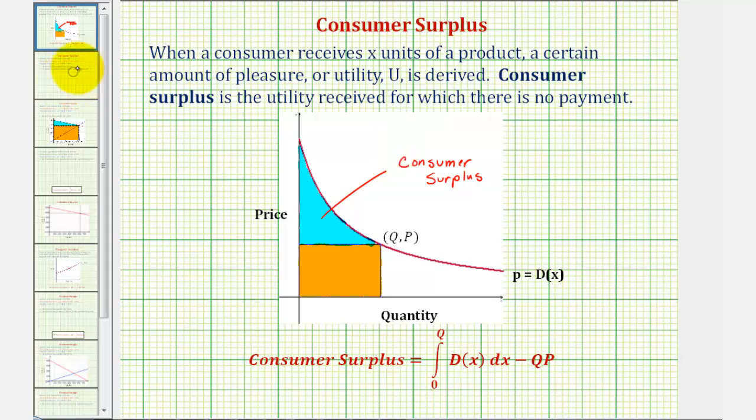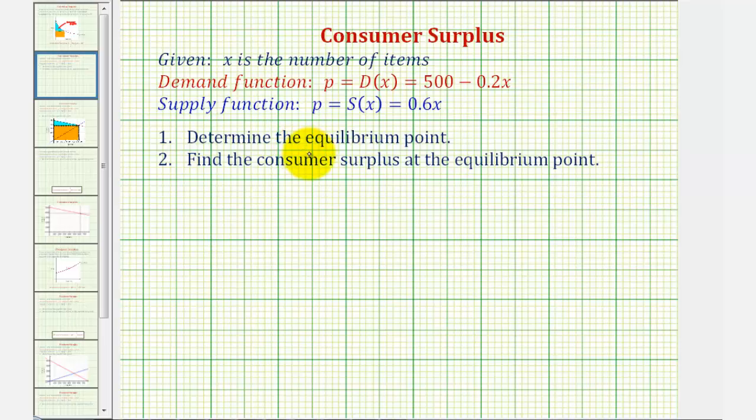So going back to our example, the equilibrium point is the point where the supply and demand are equal to each other. So we want to begin by determining when D(x) is equal to S(x).